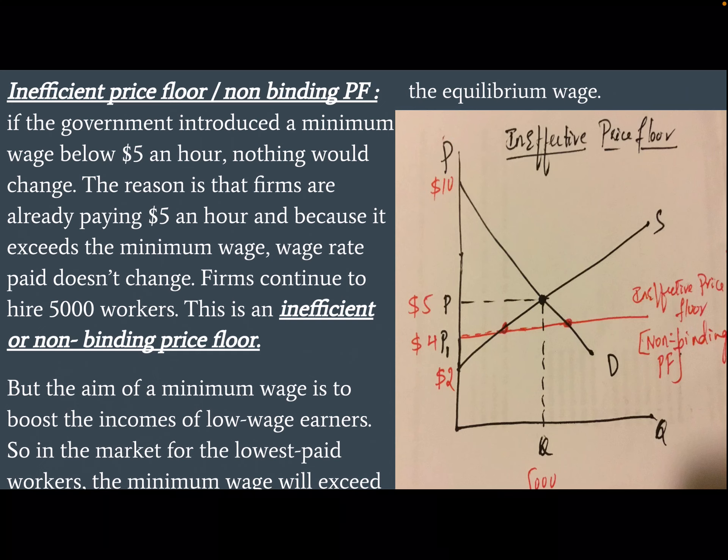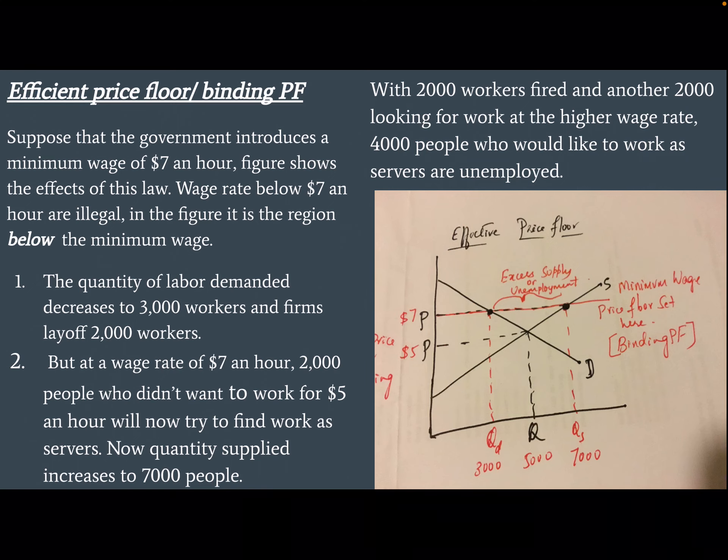But the aim of a minimum wage is to boost the incomes of low wage earners, so in the market for low paid workers, the minimum wage will exceed the equilibrium wage. Suppose the government introduces a minimum wage of $7 an hour. Wage rates below $7 an hour are illegal. The quantity of labor demanded decreases to 3,000 workers, and firms lay off 2,000 workers as a result. At the wage rate of $7 an hour, 2,000 people who didn't want to work for $5 an hour will now try to find work, so quantity supplied increases to 7,000 people. With 2,000 workers fired and another 2,000 looking for work at the higher wage rate, 4,000 people who would like to work as servers are unemployed.